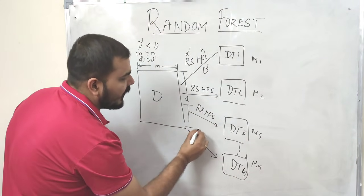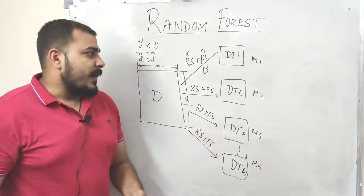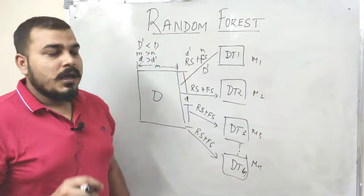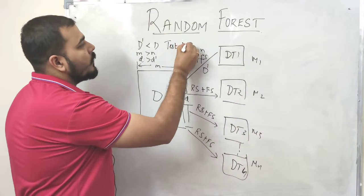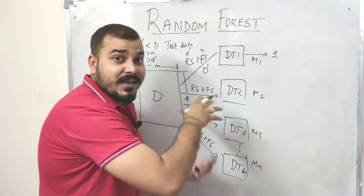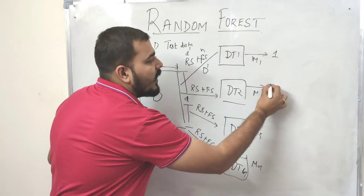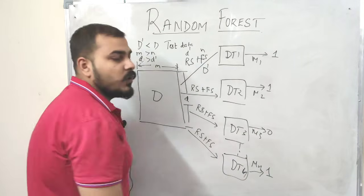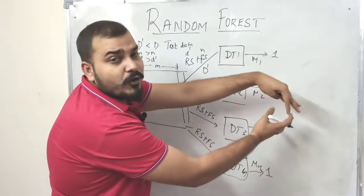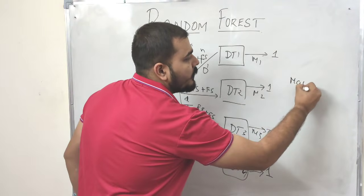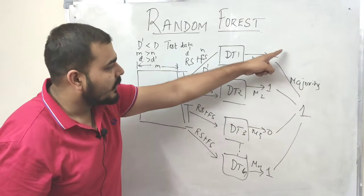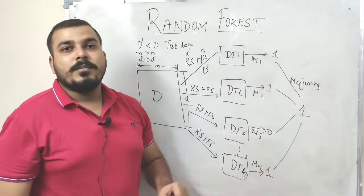Each decision tree gets trained on its particular sampled data and is then able to give predictions. When we get test data, we pass one record through all decision trees. For example, in a binary classification problem, decision tree 1 gives 1, decision tree 2 gives 1, decision tree 3 gives 0, and decision tree 4 gives 1. We aggregate using majority vote — three models say 1, so the final output is 1.